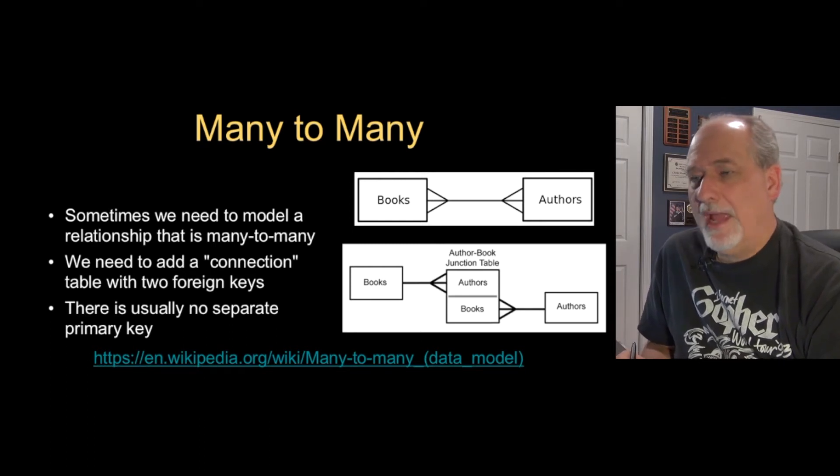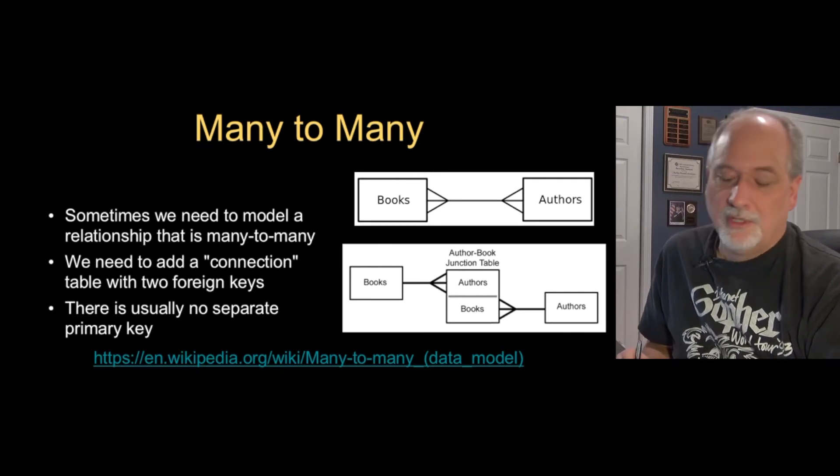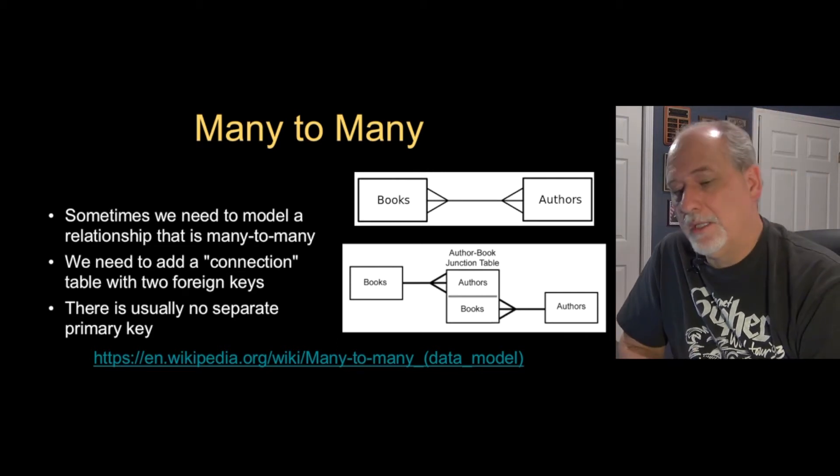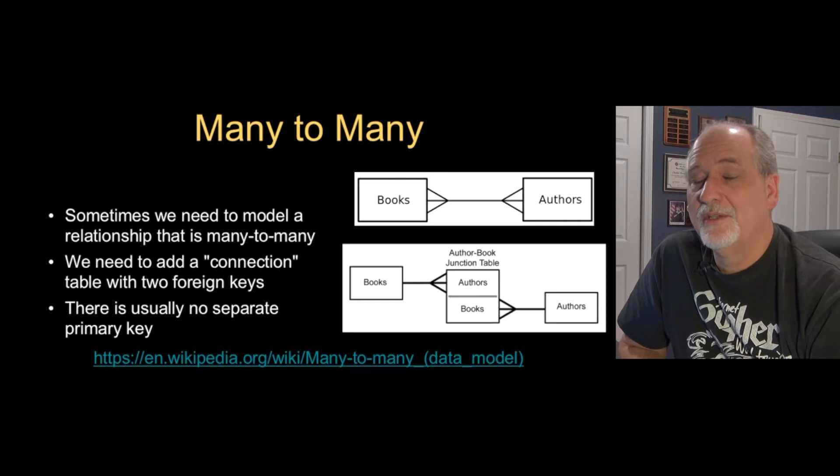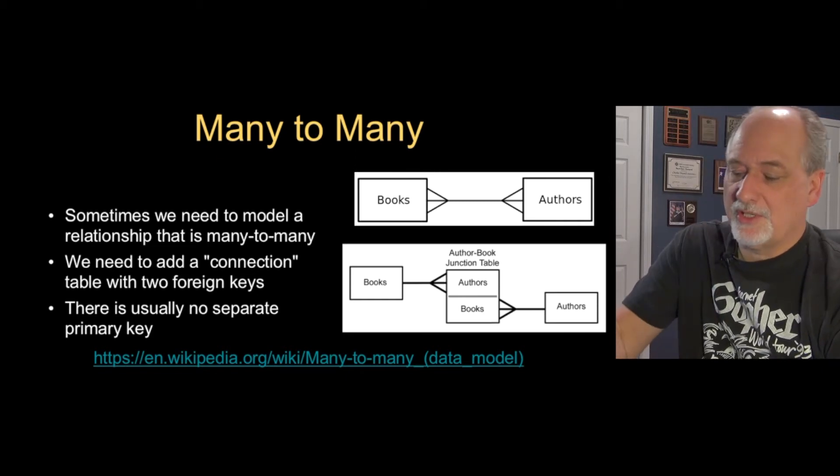You have to end up building a table that I call a connector table - they call it a junction table on Wikipedia. We need a little table that allows us to break a many-to-many relationship into two many-to-one relationships in a connector table.